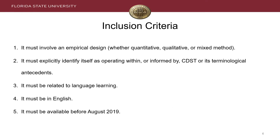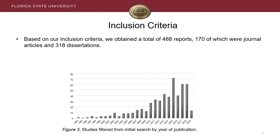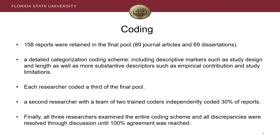To further refine the 2,341 reports that this search returned, we applied our inclusion criteria for the systematic review. During this filtering, we eliminated more than 70 methodological and conceptual articles — by themselves, these are testament to the robustness of the topical area in the field. We also included terminological antecedents to CDST, including DST (Dynamic Systems Theory) and Chaos Theory. Based on our inclusion criteria, we narrowed it down to 488 reports. There were no conference papers or book chapters that met all our inclusion criteria, but there were quite a few dissertations in this pool.